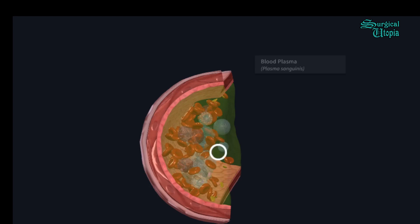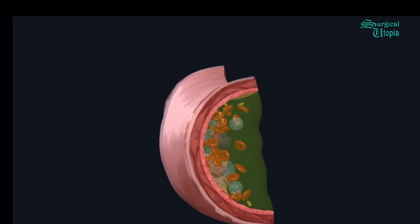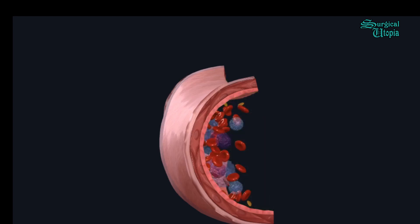The fourth protein is prothrombin, which is the precursor of thrombin — the factor responsible for converting fibrinogen into fibrin, which ultimately forms the blood clot. The next protein contained in plasma is transferrin, an iron-transporting protein that binds iron and carries it throughout the body. Now we will remove the plasma from the lumen of the artery and be left with only the blood cells.